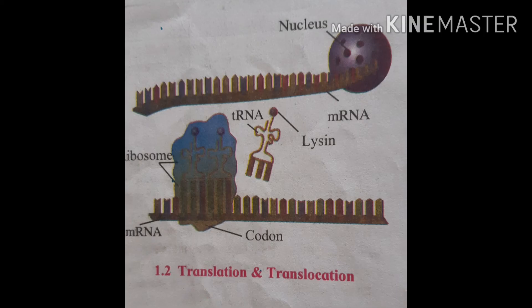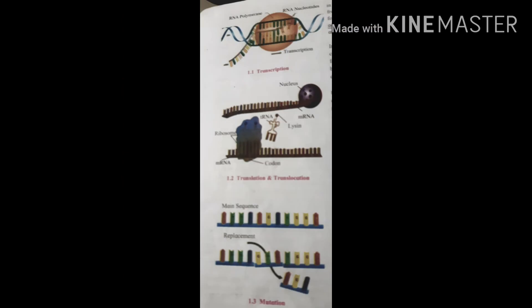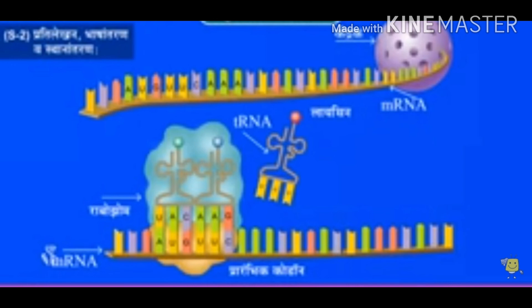tRNA has an anticodon having a complementary sequence to the codon on mRNA — this is called translation. The amino acids brought by tRNA are bonded together by peptide bonds with the help of rRNA. Translocation means the ribosome keeps moving from one end of the mRNA to the other end by the distance of one triplet codon. This is called translocation.